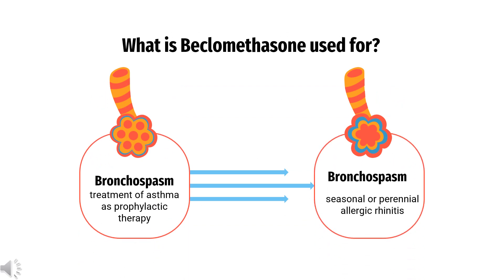What is beclomethasone used to treat? It is indicated for oral inhalation use in the maintenance treatment of asthma as prophylactic therapy in patients 5 years of age and older. The aerosol form is not indicated for the relief of acute bronchospasm. It is also indicated for intranasal use to reduce symptoms of seasonal or perennial allergic and non-allergic vasomotor rhinitis, and to prevent the recurrence of nasal polyps following surgical removal.